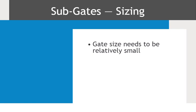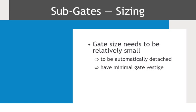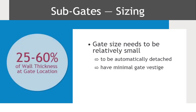Sub-gates need to be relatively small to be automatically detached from the part with minimal gate vestige and no surface damage to the part. Sub-gate size is generally between 25 to 60% of wall thickness at the gating location, and as short as possible. The most common gate styles are oval, round, and D-shape.